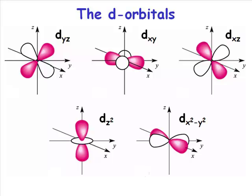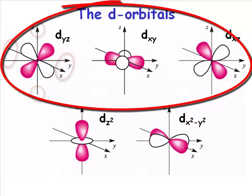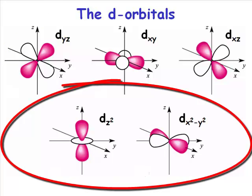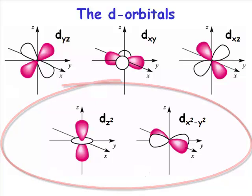In an octahedral coordination of ligands, essentially what you've got is a ligand sitting at the top and the bottom, at the left and the right of each of these axes. So in the case of these three orbitals, the orbitals are pointing between the ligands. And in the case of these two orbitals, the orbitals are pointing right at the ligands.